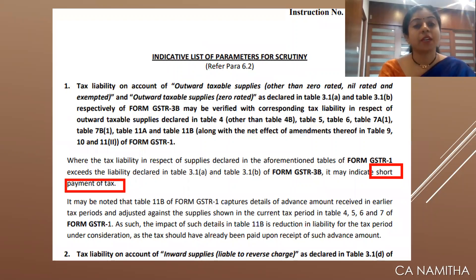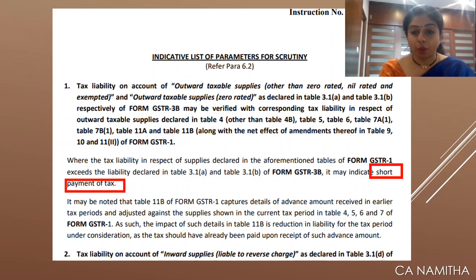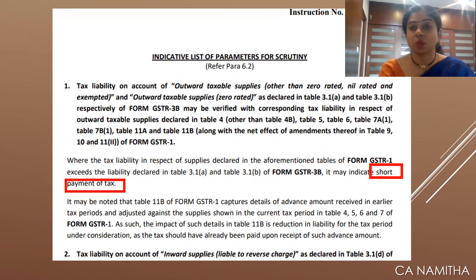There are 13 parameters or criteria on the basis of which the scrutiny cases will be selected and notices will be sent. I request listeners to be aware of these criteria and to take precautionary measures, and be ready with certain explanations, supportings, or working papers in case notices are issued.